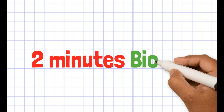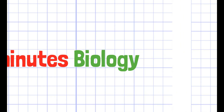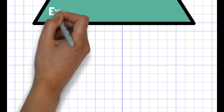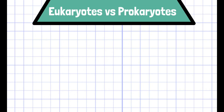Welcome to Two Minutes Bio. In this video, we'll discuss eukaryotes and prokaryotes. There are two types of cells on the planet, eukaryotes and prokaryotes. Although both of them are living organisms according to the cell theory, there are some differences between their structure.